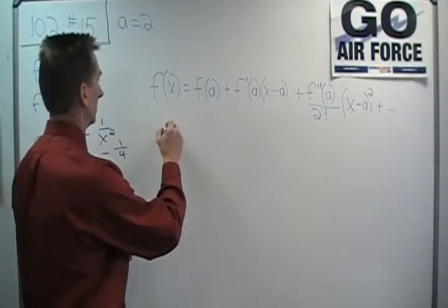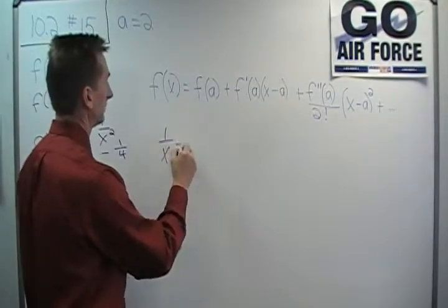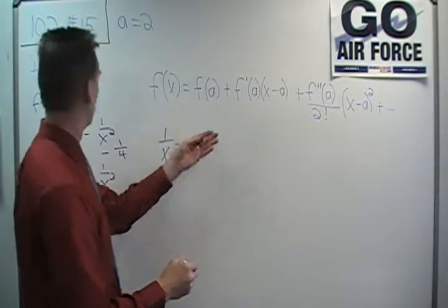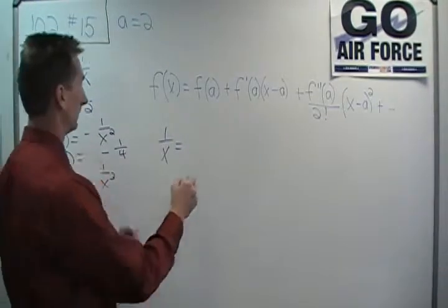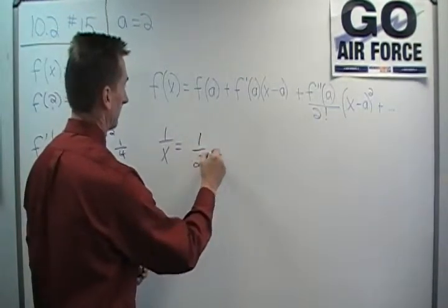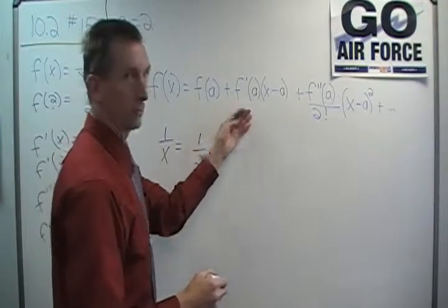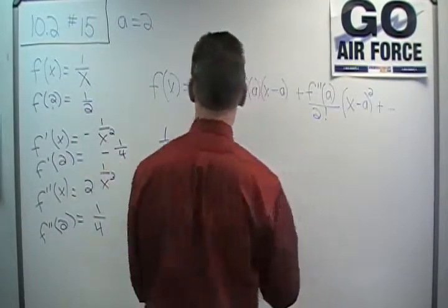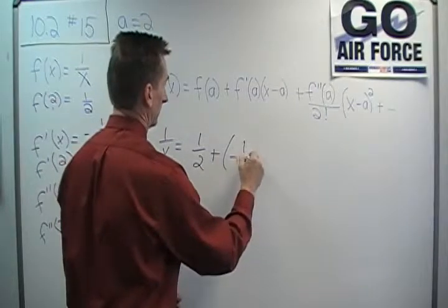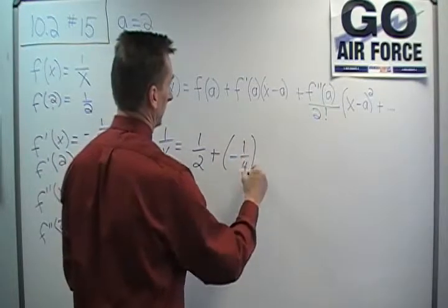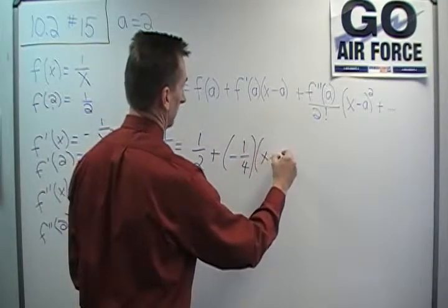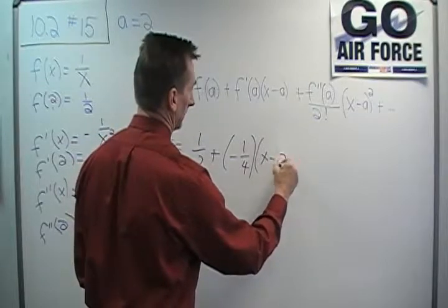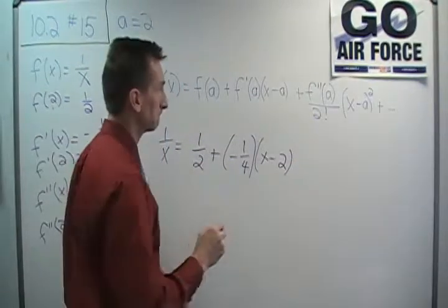I have f of x, which is 1 over x, is equal to f of a, which I've calculated to be 1 half, plus f prime of a, which we saw to be negative 1 fourth, times x minus a, and a is 2, remember. Okay.